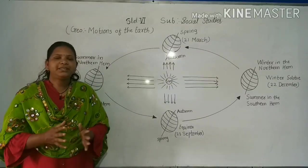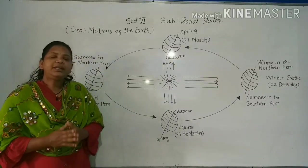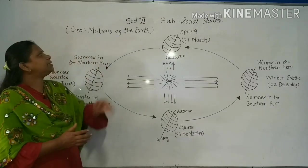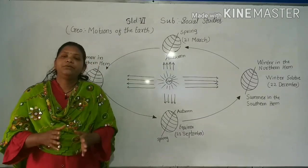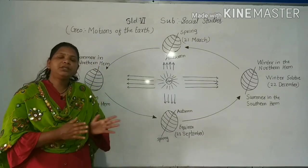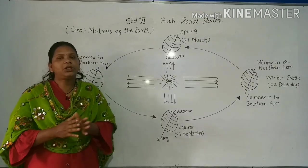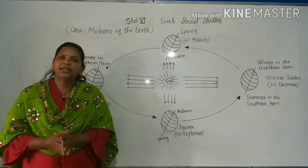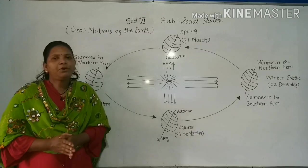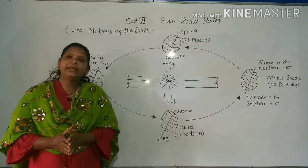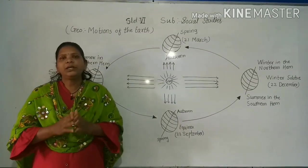Hello my dear students, Class 6. In the next session of Geographic Lesson: Motions of the Earth, we are going to discuss about the seasons as well as the solstices — summer solstice and winter solstice. But before that we will see what the elliptical orbit is. So let's start.